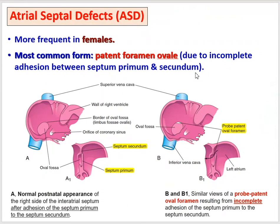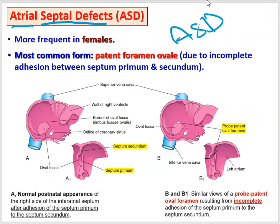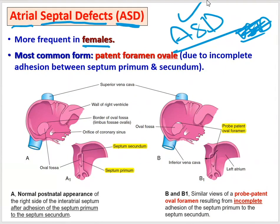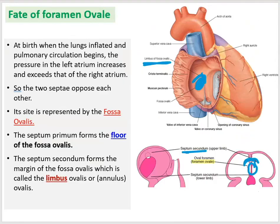Now I can start with the first defect — a defect in the interatrial septum known as an atrial septal defect. In hospitals, they use the abbreviation ASD, or VSD for ventricular septal defect. ASD is most common in females. After birth, the foramen ovale should close. Someone might ask why — because after the first breath, the pressure in the left atrium increases.